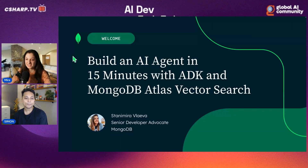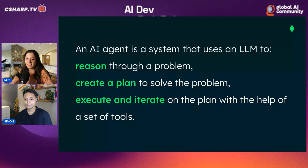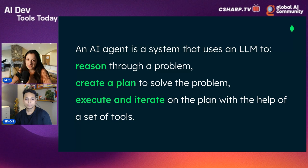I'm going to take just 15 minutes and we're going to build an agent together. To summarize what an agent is: it is an AI system that uses a large language model to reason through a problem, create a plan to solve this problem, and then execute and iterate on the plan with the help of a set of tools — meaning some external APIs or external functions calling something outside the scope of the LLM.